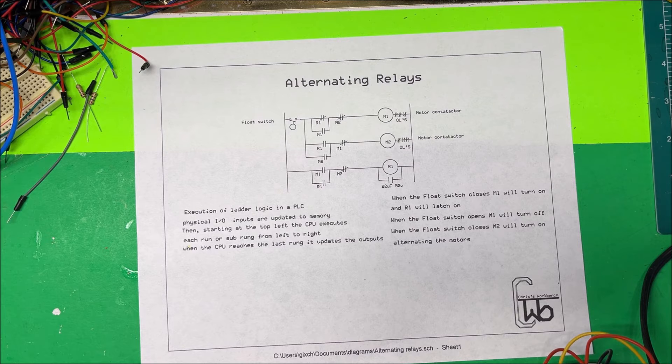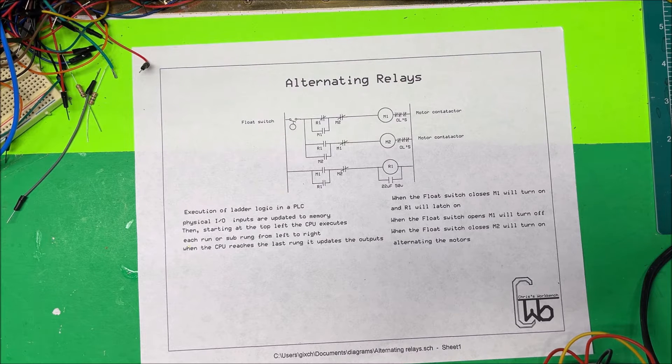Let's talk about alternating relays. We use those to control motors, and motors have duty cycles - maybe they can only start 20 times an hour and have to rest three minutes between each start. If you have to do more than that, then you want to use two motors and alternate them.